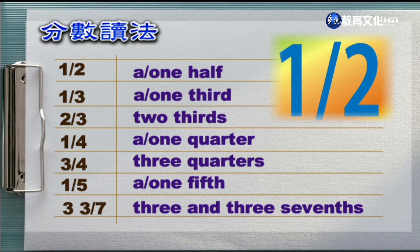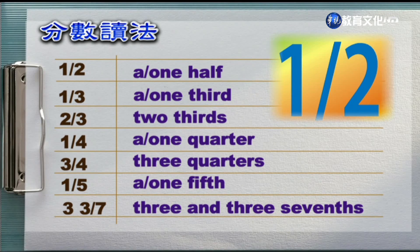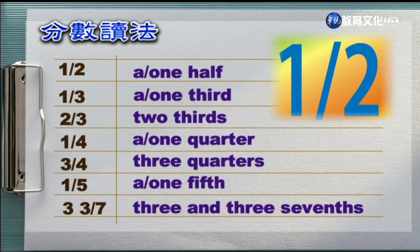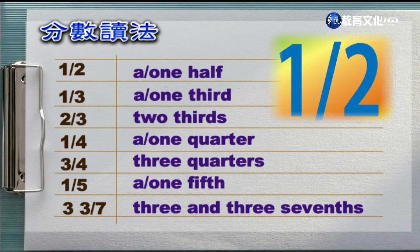我们请Jeff老师来帮我们念一下有关分数的单字。A half, or one half. One half, a third, or one third. Two thirds. A quarter, or one quarter. Three quarters. A fifth, or one fifth. Three and three sevenths. 好，同学可以看到，三分之二的话就是two thirds，third后面必须要再加上s。如果是三分之一的话，你就是one third，这是单数的用法。这些都是有关于分数的用法，同学回去可以再熟练一点。